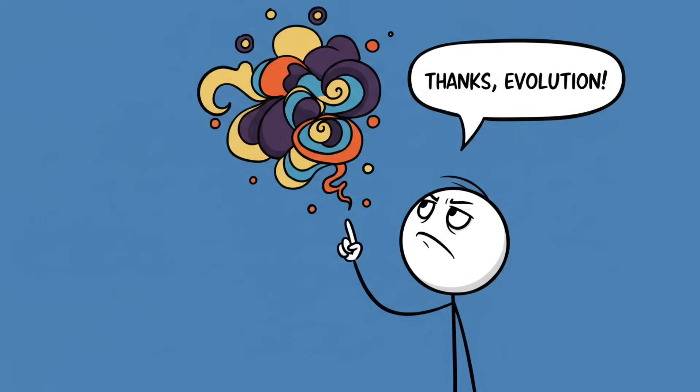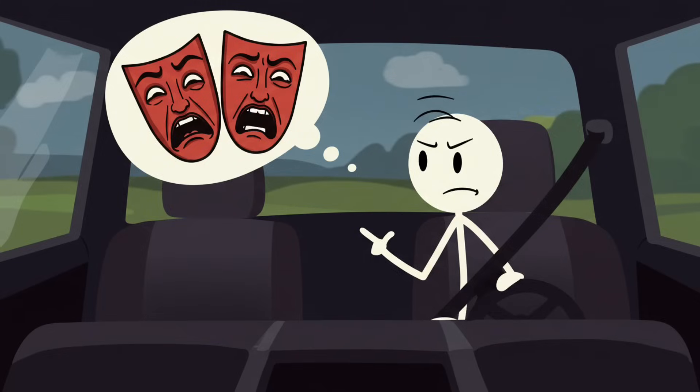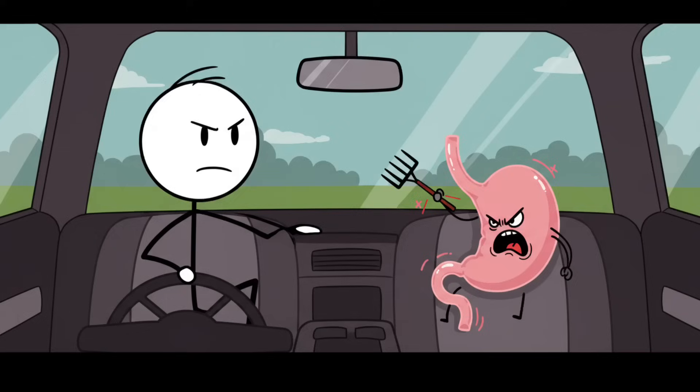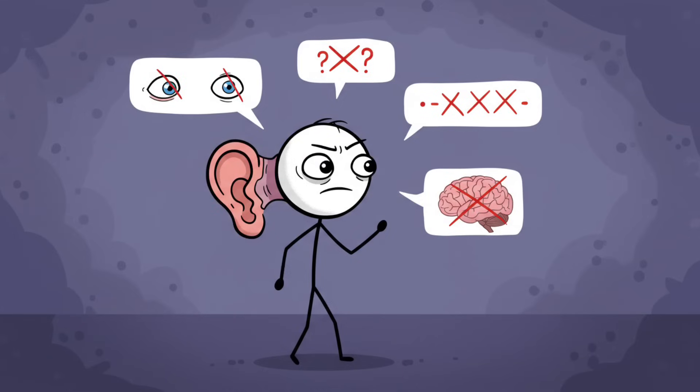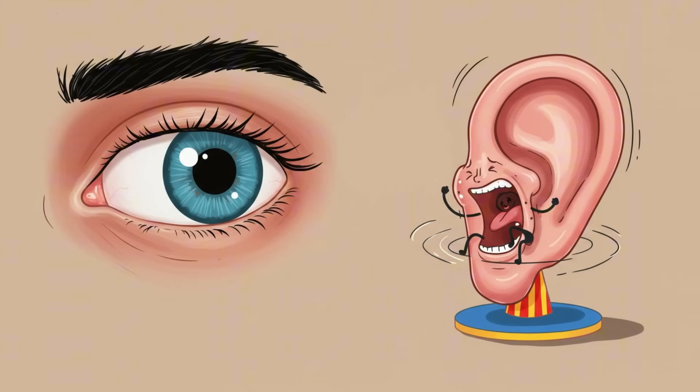Number six: motion sickness is just your brain being dramatic. Ever been in a car staring at the horizon feeling fine and then suddenly your stomach decides it wants to start a riot? Congratulations, you're officially a victim of motion sickness, the universe's way of saying your brain is a diva. Essentially, your inner ear, eyes, and brain are having a miscommunication. Your eyes say everything's fine, we're stationary, while your inner ear is screaming nope, we are on the tilt-a-whirl from hell.